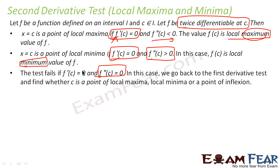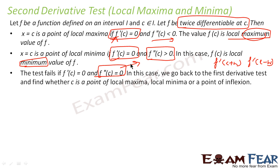If f''(c) = 0, we have to go back to the first derivative test. We find f'(c+h) and f'(c-h), where h is a very small number, and see which direction the slope is changing to determine local maxima or minima. So to summarize: double differentiate — less than zero means maxima, greater than zero means minima, equal to zero means the test fails and we go to the first derivative test.